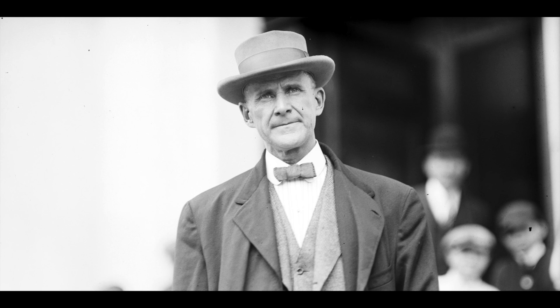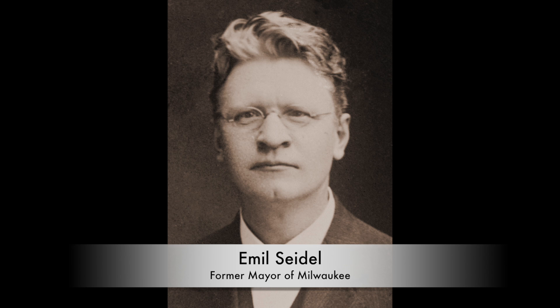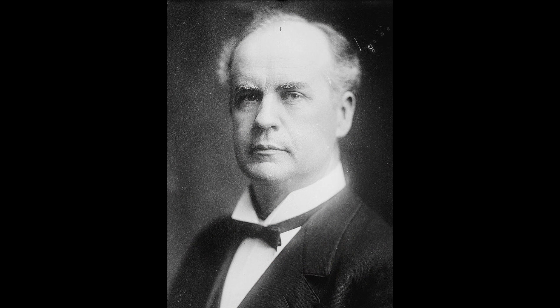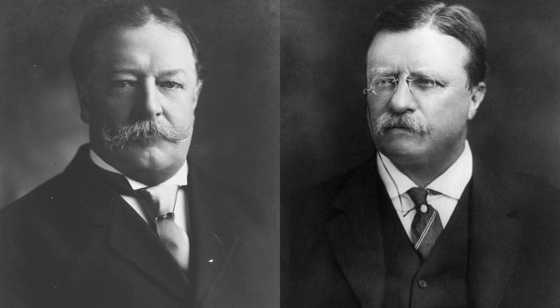In 1912, Eugene Debs ran for president a fourth time, trying to keep together a socialist party that was also splintering. Debs was by this time a recognizable name across the nation, and his running mate was Emil Seidel, the former mayor of Milwaukee — the first-ever socialist mayor of an American city, as a matter of fact. The Prohibition Party responded by having their Eugene run again too: Eugene Chafin gave it a second try with Aaron Watkins again as his running mate.